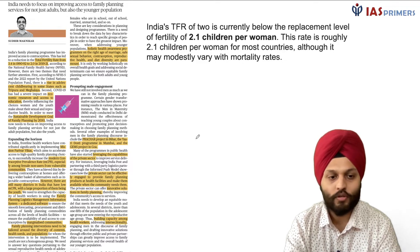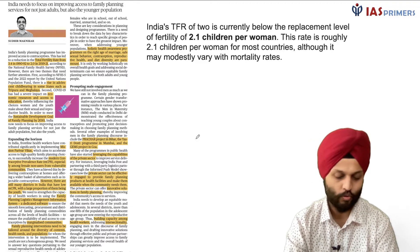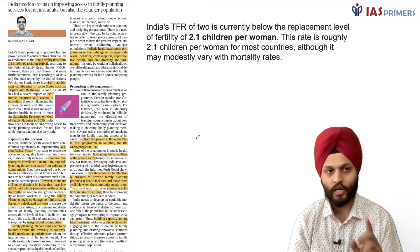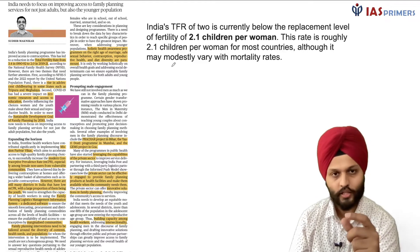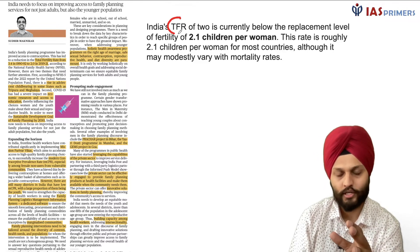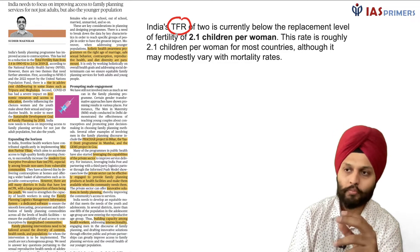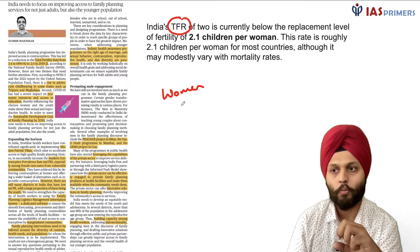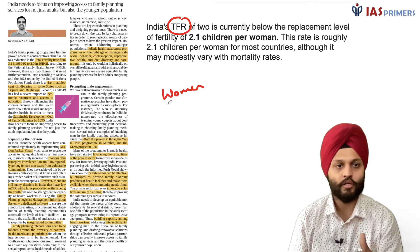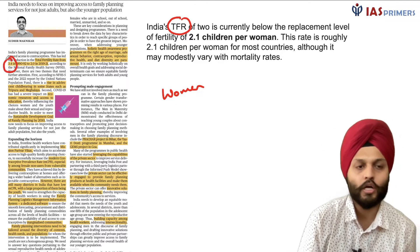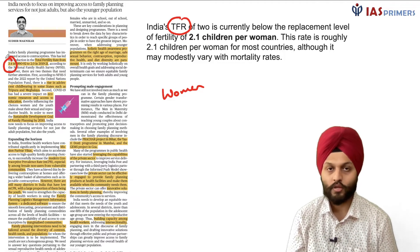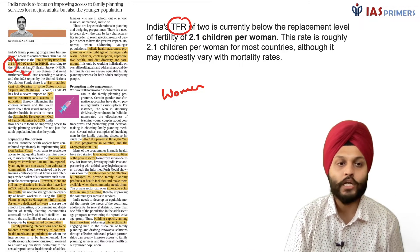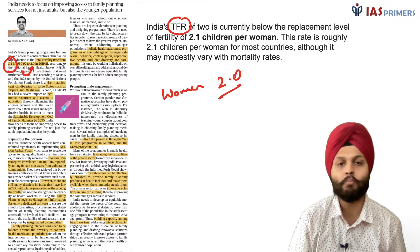The next article is about fertility rate and family planning. Our total fertility rate — meaning on average, how many children a woman gives birth to in her lifetime — was 3.4 in the 1990s. But now according to the National Family Health Survey, we have come down to 2.0 to 2.2 children per woman.